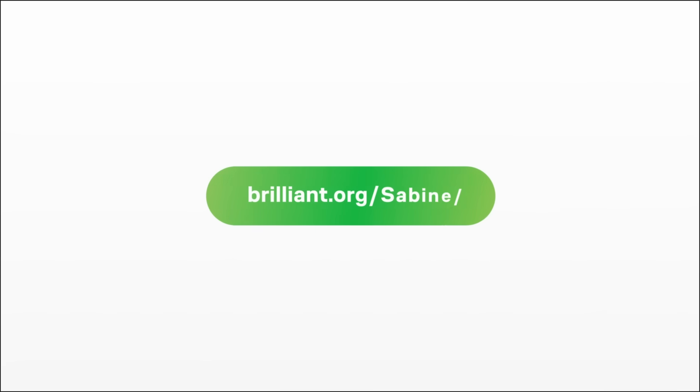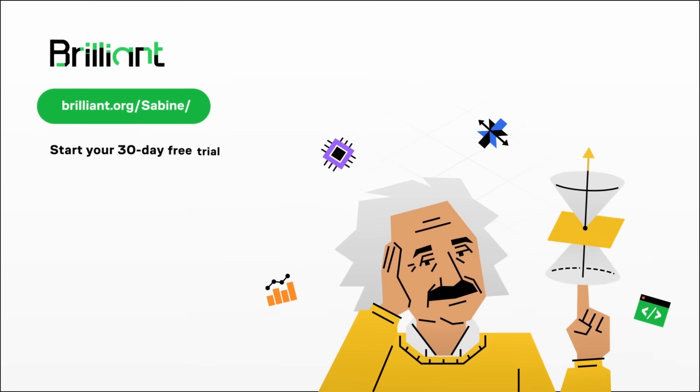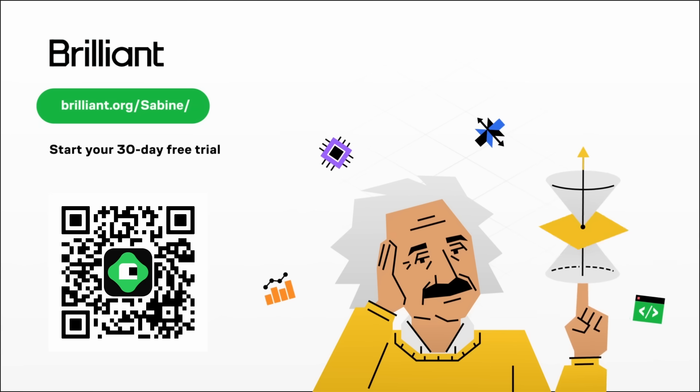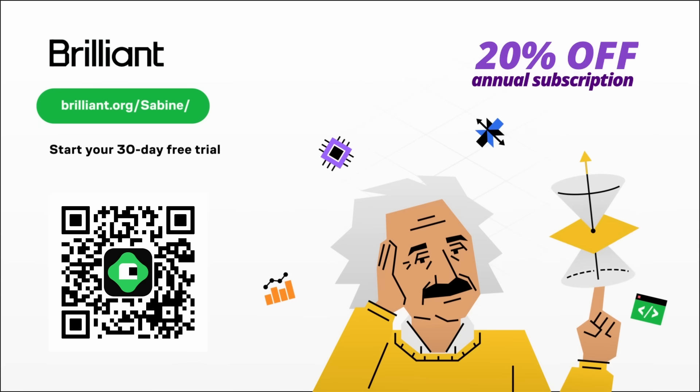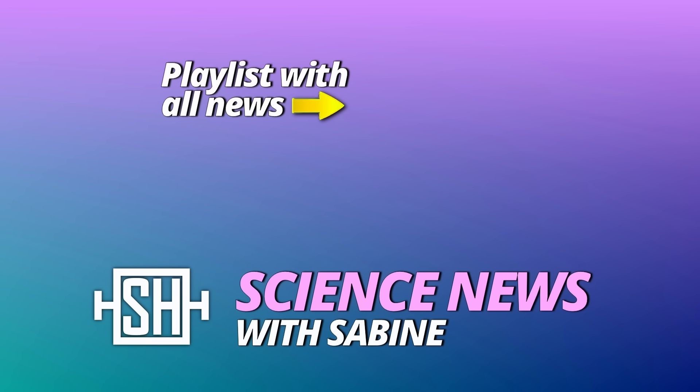Sounds good? I hope it does. You can try Brilliant yourself for free if you use my link brilliant.org slash sabine or scan the QR code. That way you'll get to try out everything Brilliant has to offer for a full 30 days and you'll get 20% off the annual premium subscription. So go and give it a try. I'm sure you won't regret it. Thanks for watching. See you tomorrow.